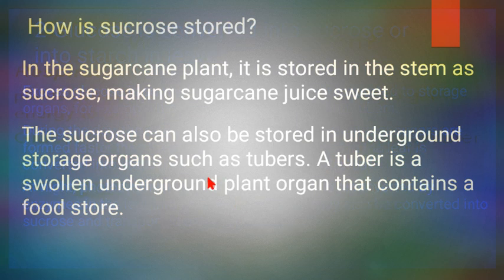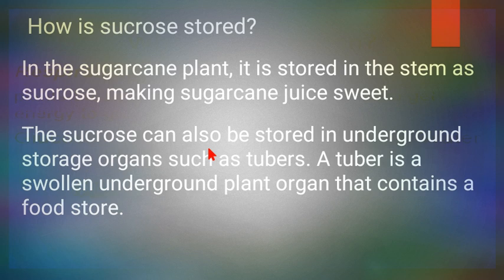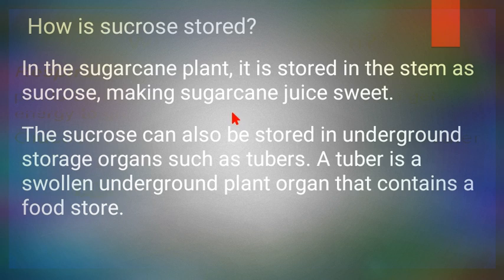Regarding how sucrose is stored — take the example of a sugarcane plant. Sucrose is basically table sugar, which we add to our tea. Sugar is obtained from beetroot and sugarcane plants. In these plants, glucose is stored in the form of sucrose.